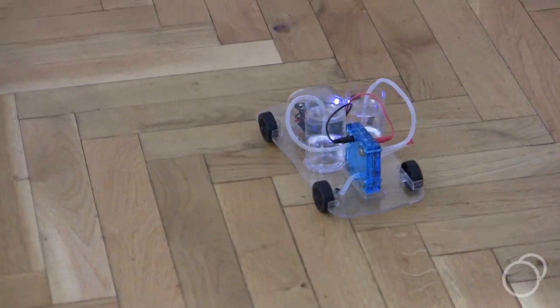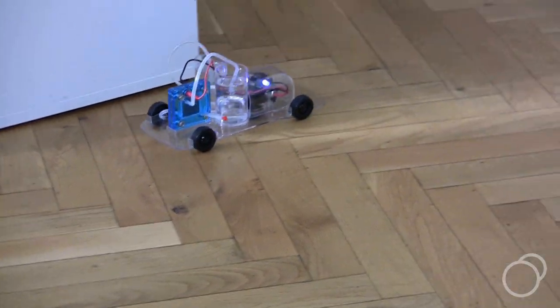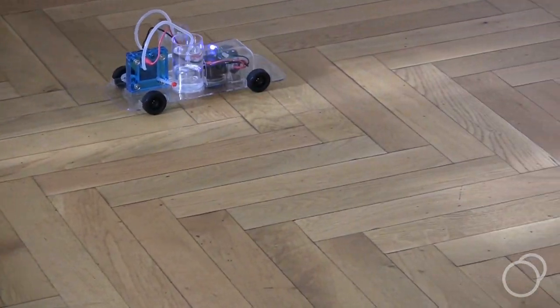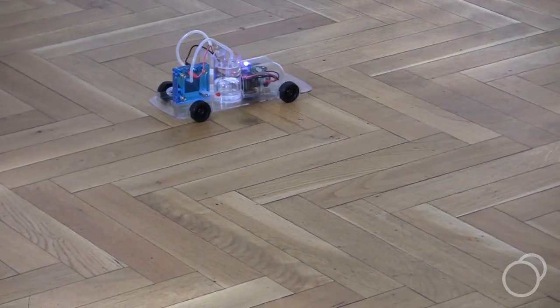It will even turn and back up to avoid obstacles. The sturdy plastic body ensures that it can take the wear and tear of student use, as well as the occasional collision with a wall. Dual LEDs light up when the motor is connected.